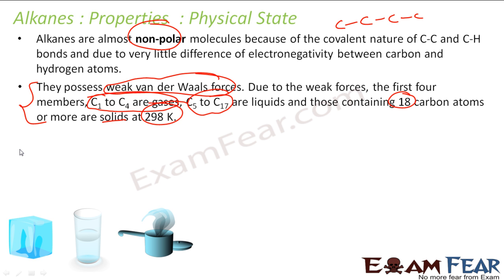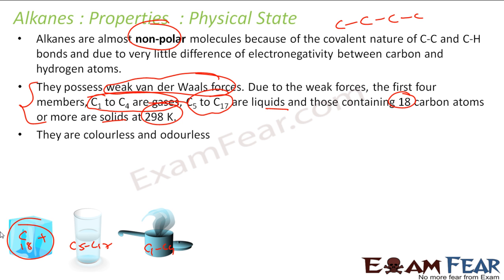This is at temperature 298 Kelvin. At STP, C1 to C4 are gases, C5 to C17 are liquids, and C18 plus are solids. They are all colorless and don't have any smell. For example, aromatic compounds have a particular smell, but alkanes don't have any color or smell.